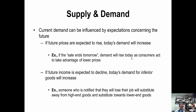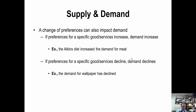The last two demand shifters are expectations and preferences. If we expect prices to be lower in the future, demand today drops because people will wait until prices fall. Conversely, if prices are expected to increase tomorrow, you might see an increase in demand today. If a commodity is a normal good and you expect your income to increase in the future, we might see an increase in demand today for that commodity.